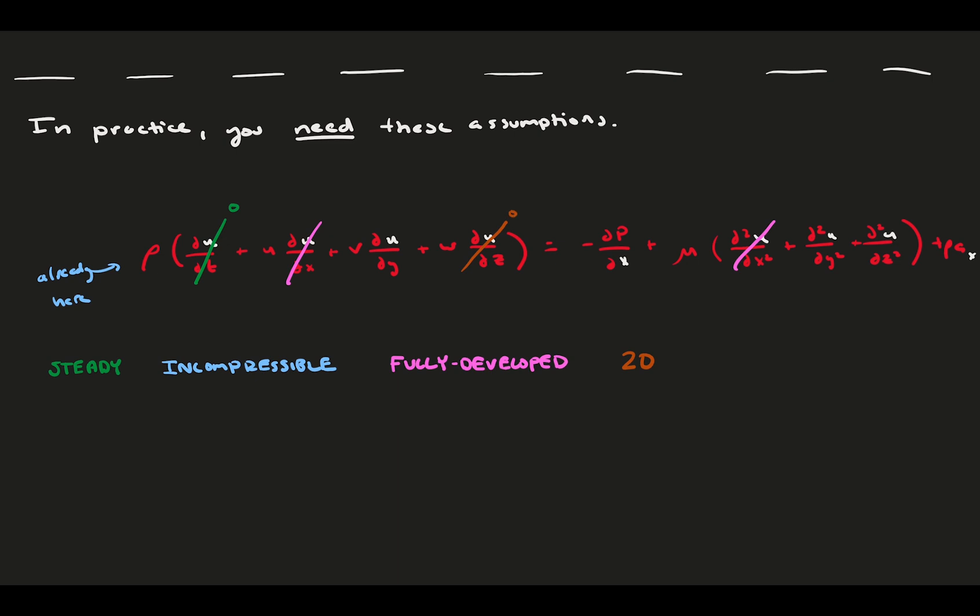Two d, two c assumptions let us get rid of z derivatives and the w velocity. Last, we assume no body forces and chop off that last term. This leaves us with a much more approachable and solvable function that still accurately describes some fluid flows. You will often be relieved at how simple an assumption can make your problem.